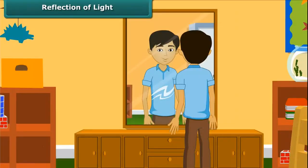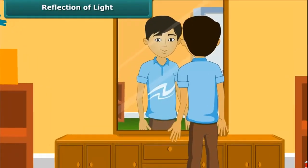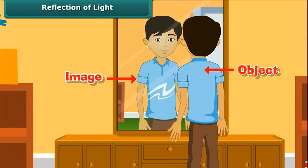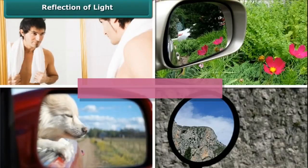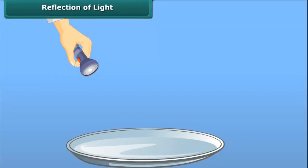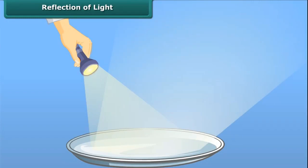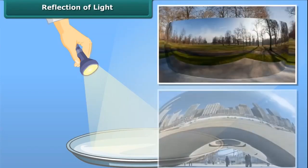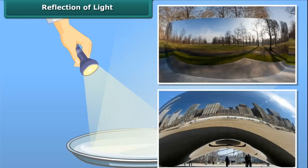It's no surprise that when we look in a mirror, we see an image of ourselves reflected back. Mirror is an object that reflects light. Now look at this shiny stainless steel plate. When light falls on its surface, it gets reflected. Therefore, any polished or shiny surface can act as a mirror and can change the direction of light.